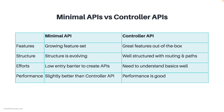When it comes to performance, controller API performance is already good. However, minimal APIs have a slight advantage — they offer slightly better performance than controller APIs. That said, when implementing APIs, you can assume the performance is going to be almost the same in both cases. So don't worry about performance when picking one technology over the other.